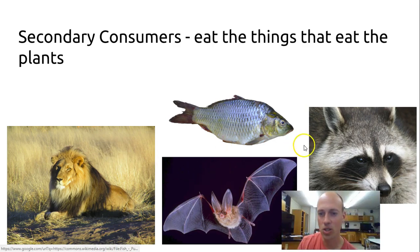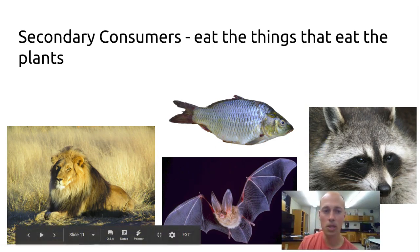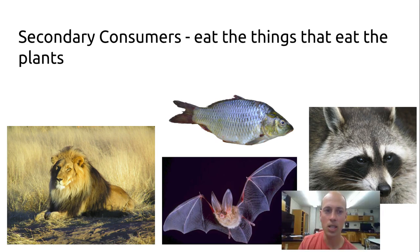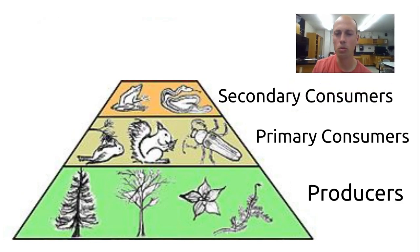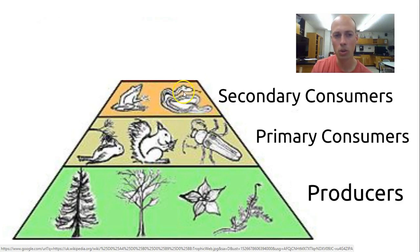Lions, bats, fish, raccoons, they can all be secondary consumers if they are eating the things that eat plants. So here we go on our food pyramid here. Not food pyramid, but energy pyramid. Secondary consumers, you'll notice that it gets more narrow. It's not 90% more narrow, so it's not perfectly accurate. But you should know that there will be fewer secondary consumers in any ecosystem compared to primary consumers or producers.